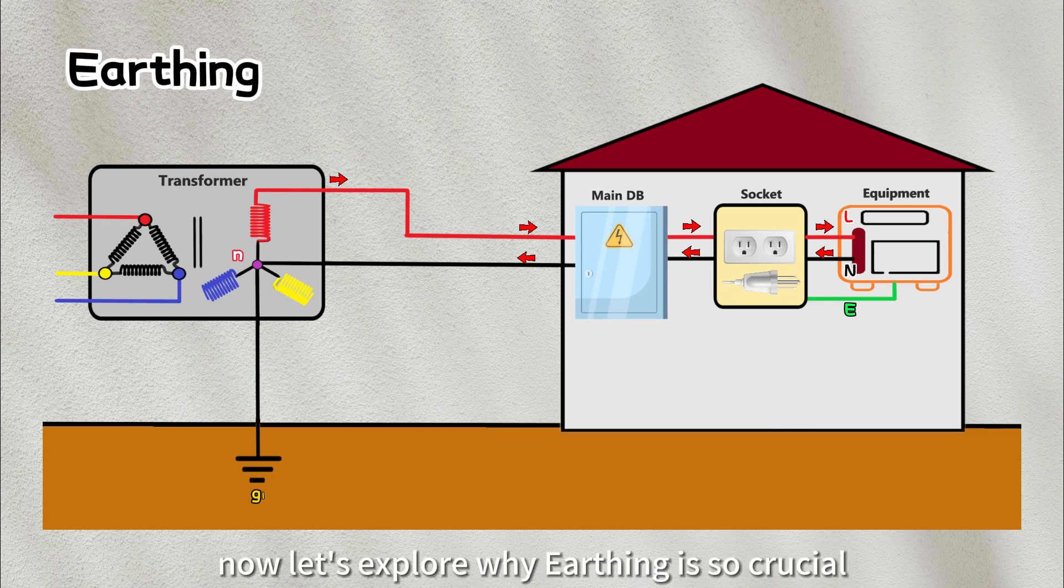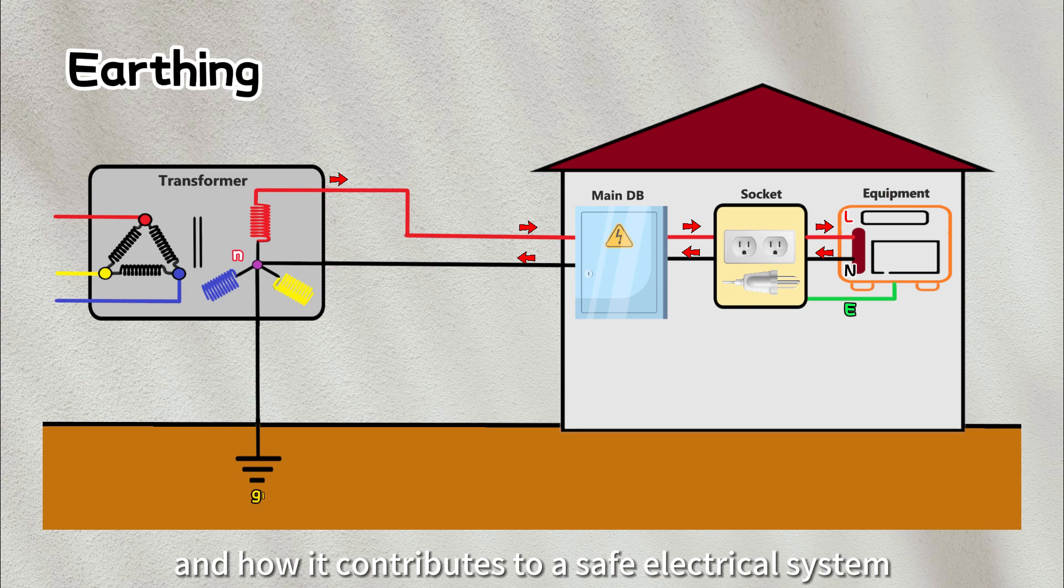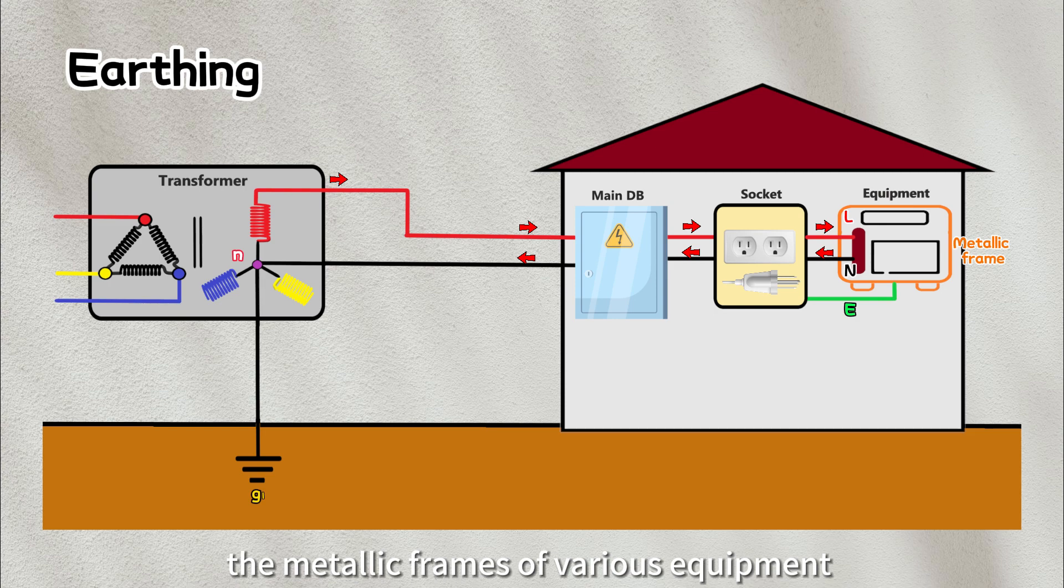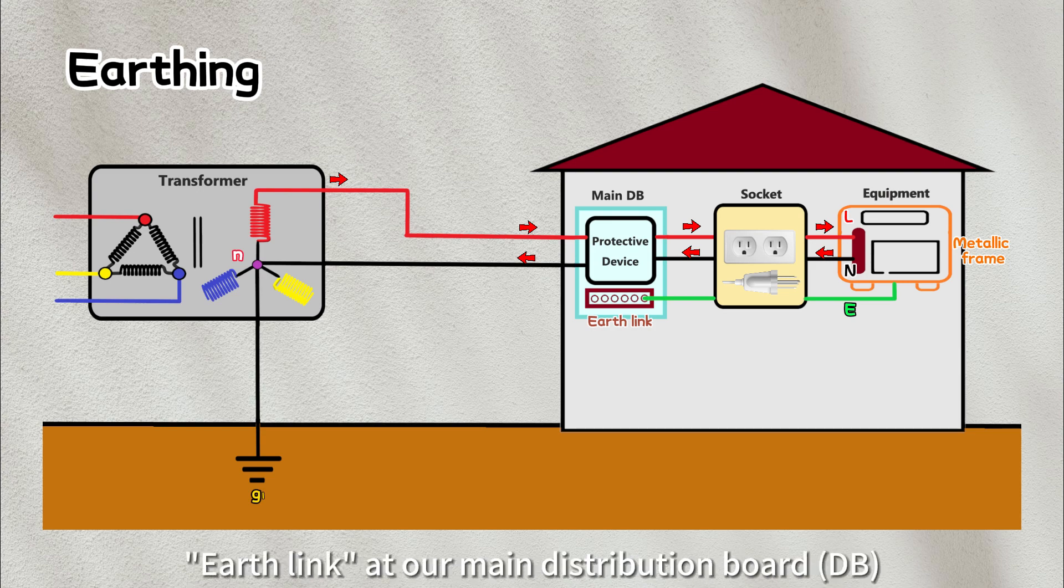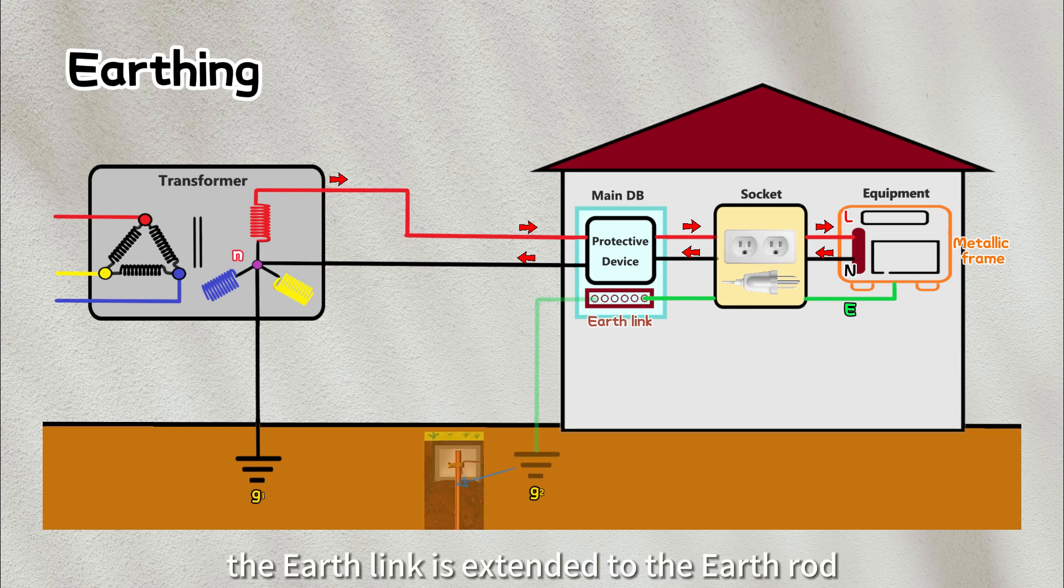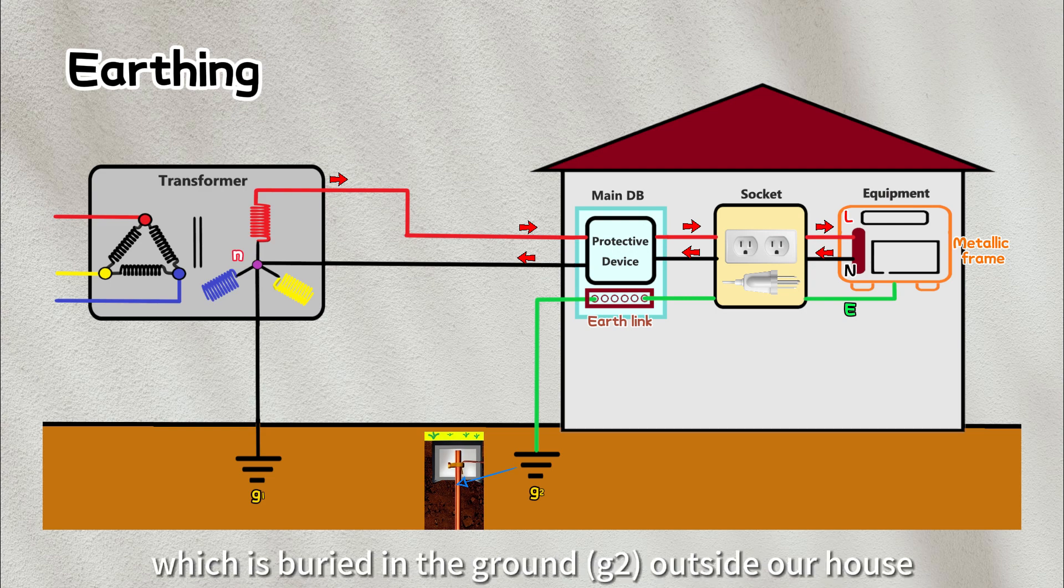All right, now let's explore why earthing is so crucial and how it contributes to a safe electrical system. In practical applications, the metallic frames of various equipment are commonly connected to the earth wire. Subsequently, all these earth wires are connected to the earth link at our main distribution board. From there, the earth link is extended to the earth rod, which is buried in the ground outside our house.